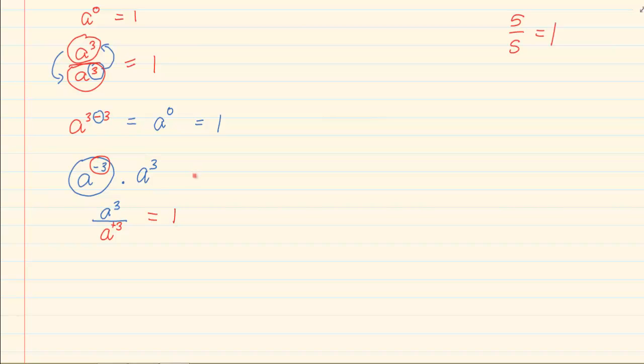If we were just simply using exponential rules, as in law 1 where we add the powers, then we would have had minus 3 plus 3, which is equal to a to the power of 0, again proving that a to the power of 0 is equal to 1.